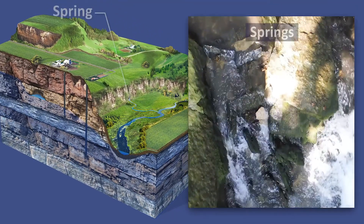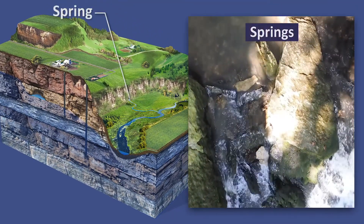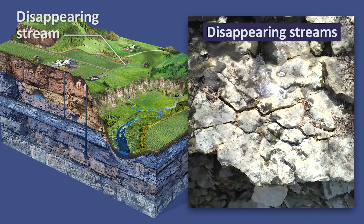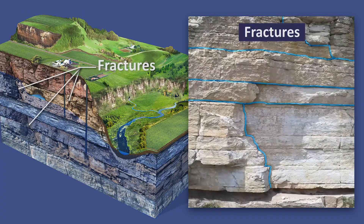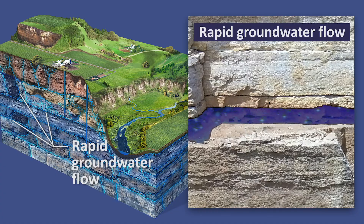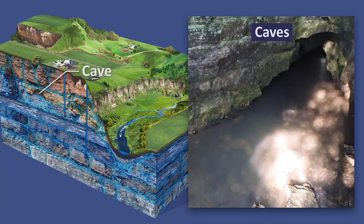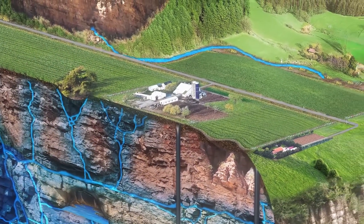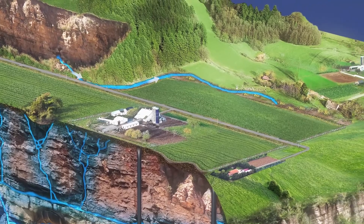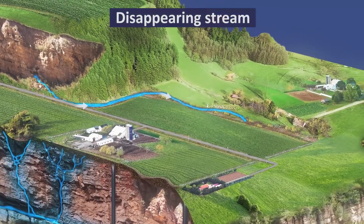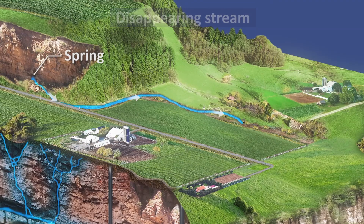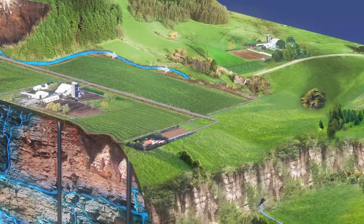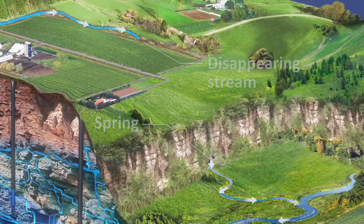The resulting dissolved bedrock is known as karst. Karst is characterized by springs, sinkholes, disappearing streams, enlarged bedrock fractures, rapid groundwater flow, and caves. In karst landscapes, the distinction between groundwater and surface water is oftentimes not clear. For instance, groundwater may emerge as a spring, flow a short distance above ground, and then disappear back underground. This same water could then reemerge farther downstream again as surface water.